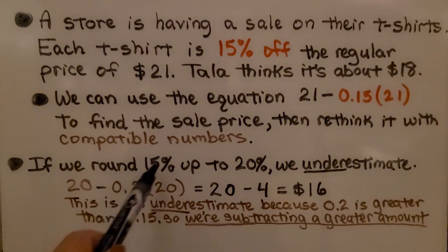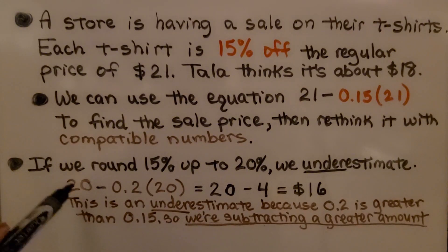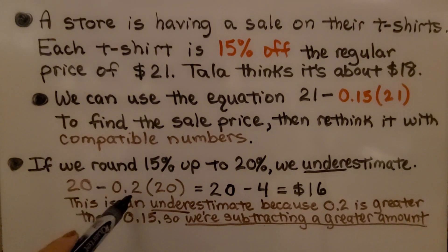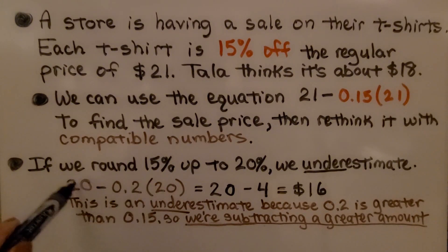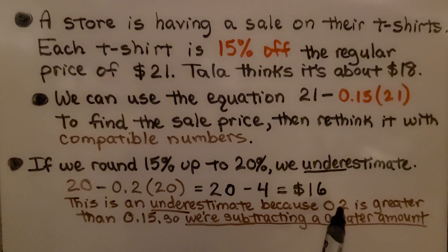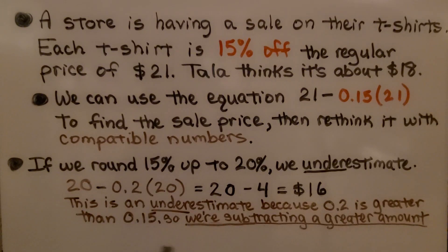If we round 15% up to 20%, we underestimate. We can round the 21 to 20 for the original price and do 20 minus 0.2 times $20. So that means we have 20 minus 4, which is equal to $16. This is an underestimate because 0.2 is greater than 0.15, so we're subtracting a greater amount — 20% than 15%.